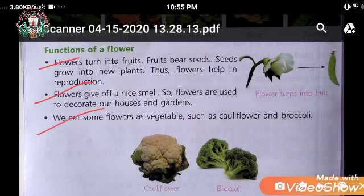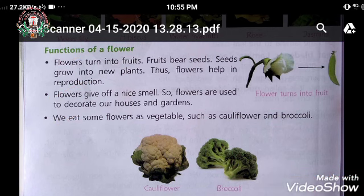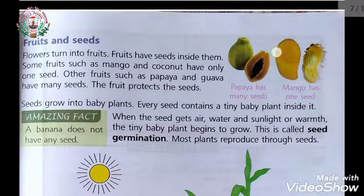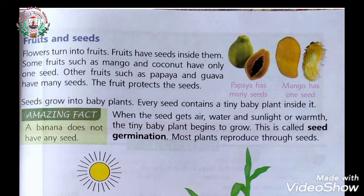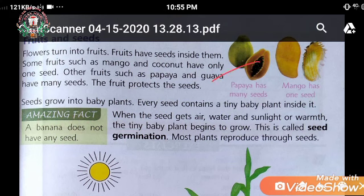We eat some flowers as vegetables, such as cauliflower and broccoli. Fruits and seeds: as you know, flowers turn into fruits. Mango has one seed, whereas papaya and watermelon have many seeds. This is the papaya, and this is the mango having one seed.